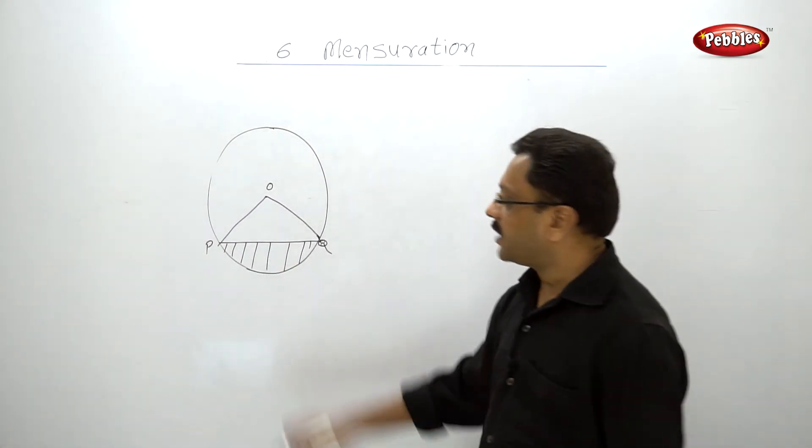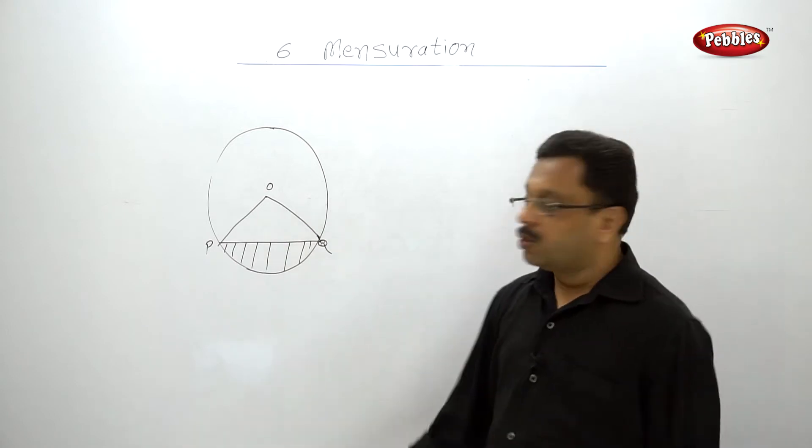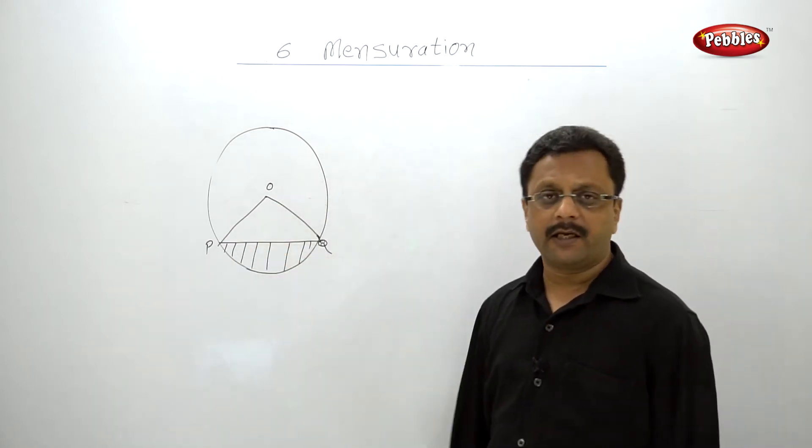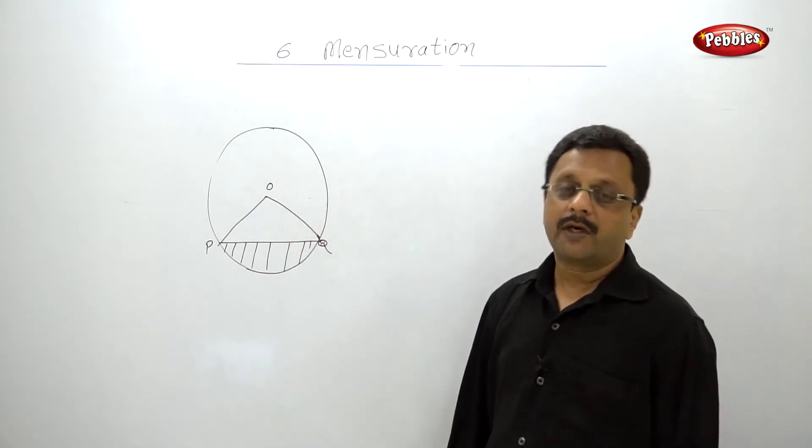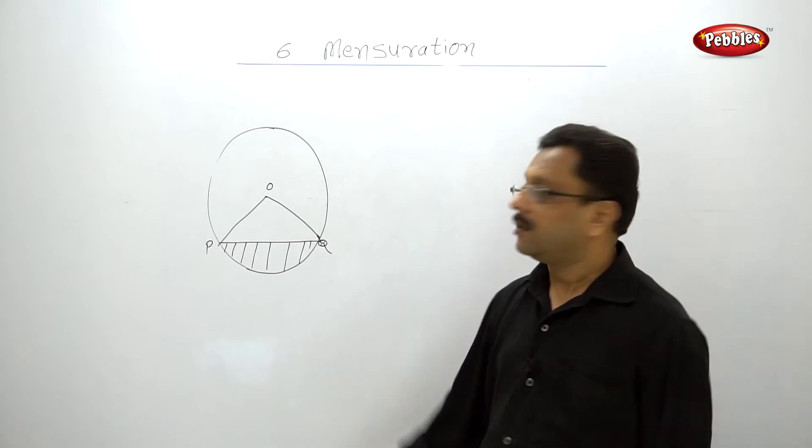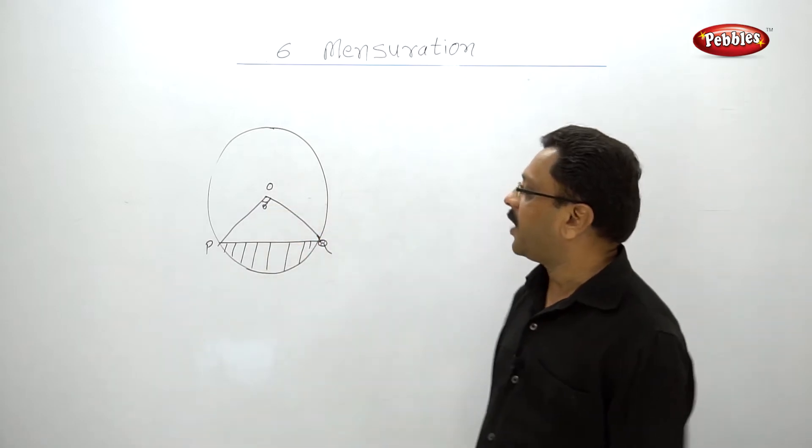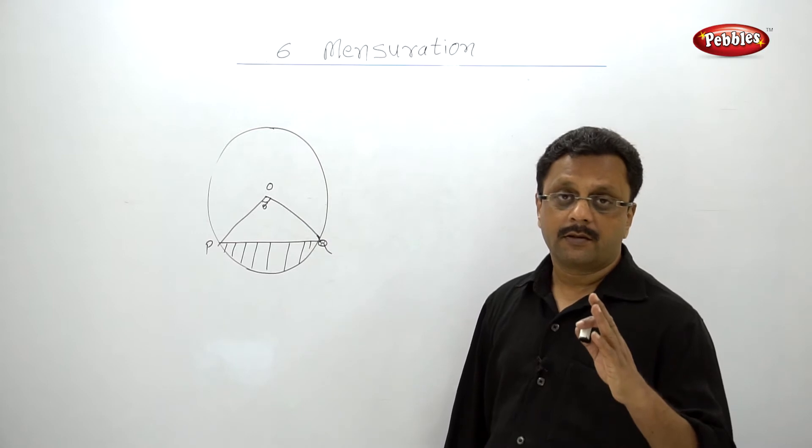This is the segment. Now you can easily see, this is a sector, you can find out the area of sector and this is a triangle, you can easily find the area of triangle. This angle theta is given, you can find out the area of this triangle. Now the hitch is in the formula, how to find an area of triangle.